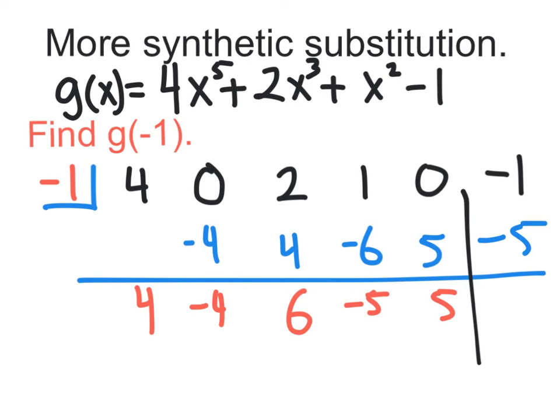And the remainder, if we were doing long division, would be negative 6. However, we know that this is not a remainder because we're not doing long division. We're actually doing synthetic substitution, which means that this guy right here is the output. If I were to plug in a negative 1 into my x values and then work it all out, I would get negative 6 as my final answer. You got it?